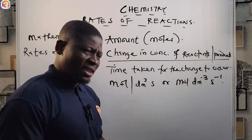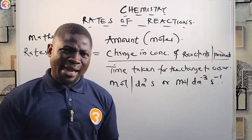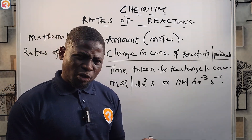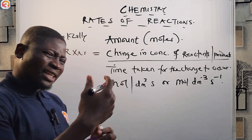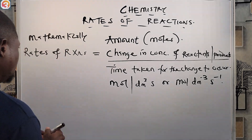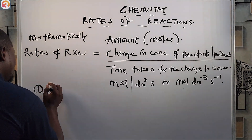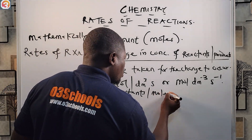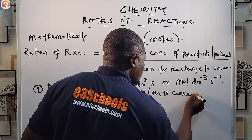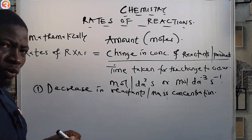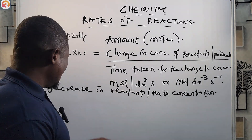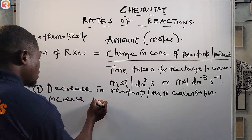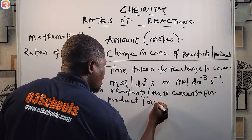Now, how are reaction rates determined? The rate at which a reaction occurs is measured by a few factors. Number one: decrease in reactants or mass concentration. Number two: increase in products or mass concentration.